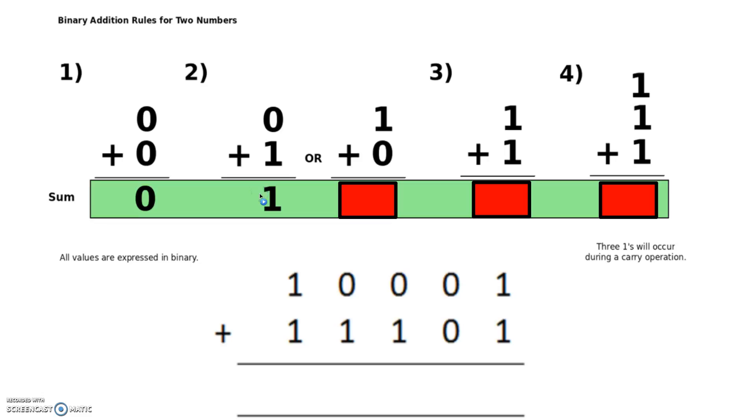The next example gets a little bit more tricky. This one here we're doing one plus one. Now we all know that the answer to that is two, but we're working in binary so actually the answer is one zero: zero ones and one two.